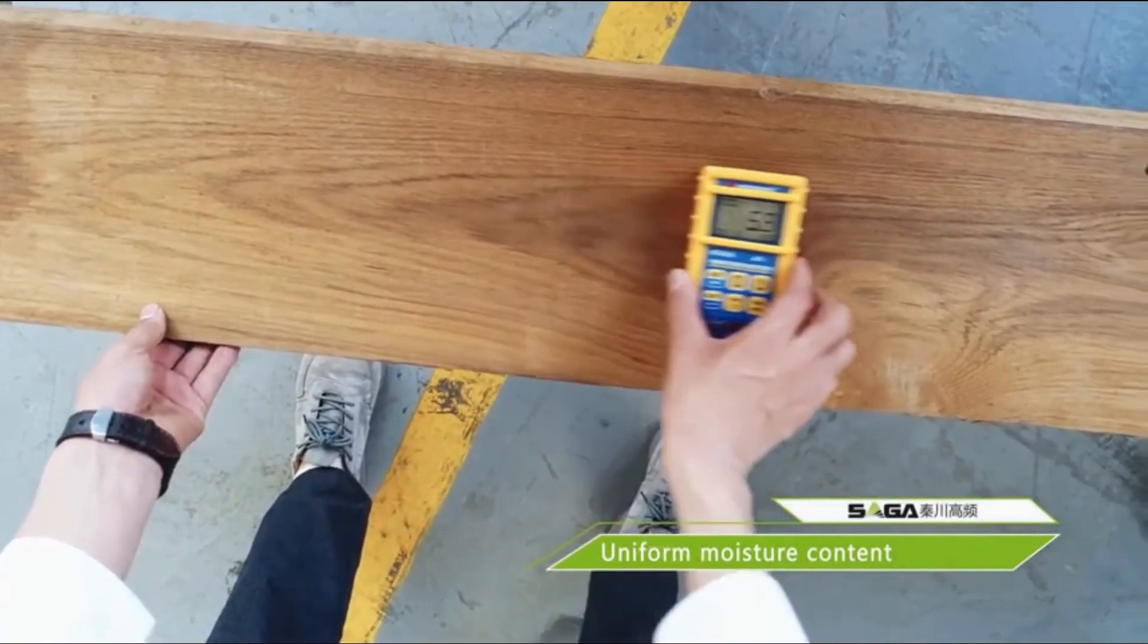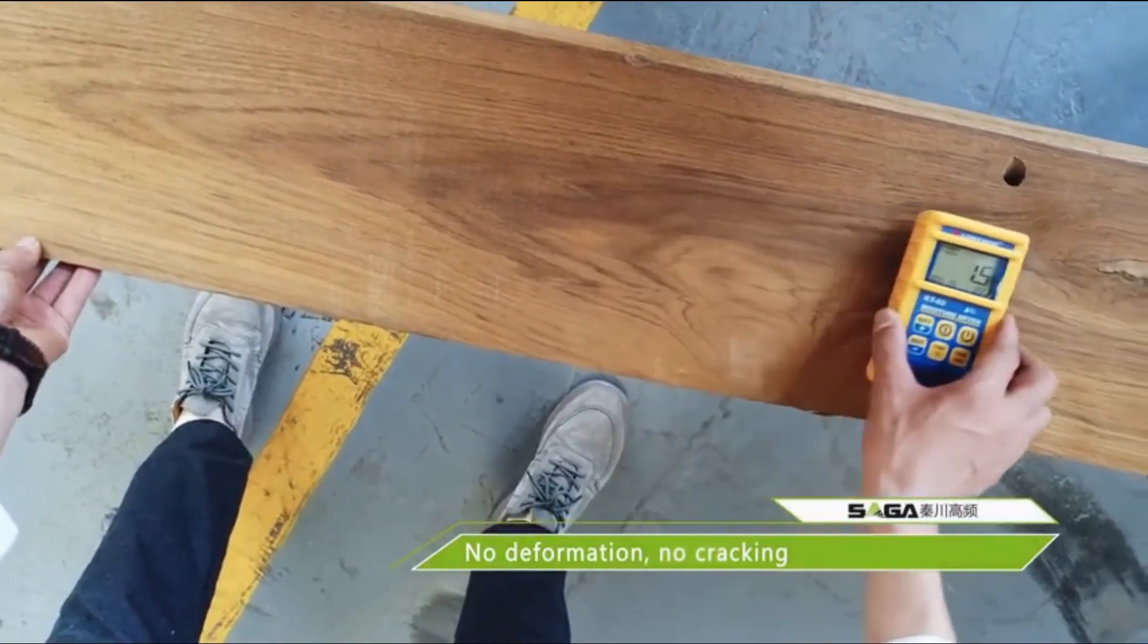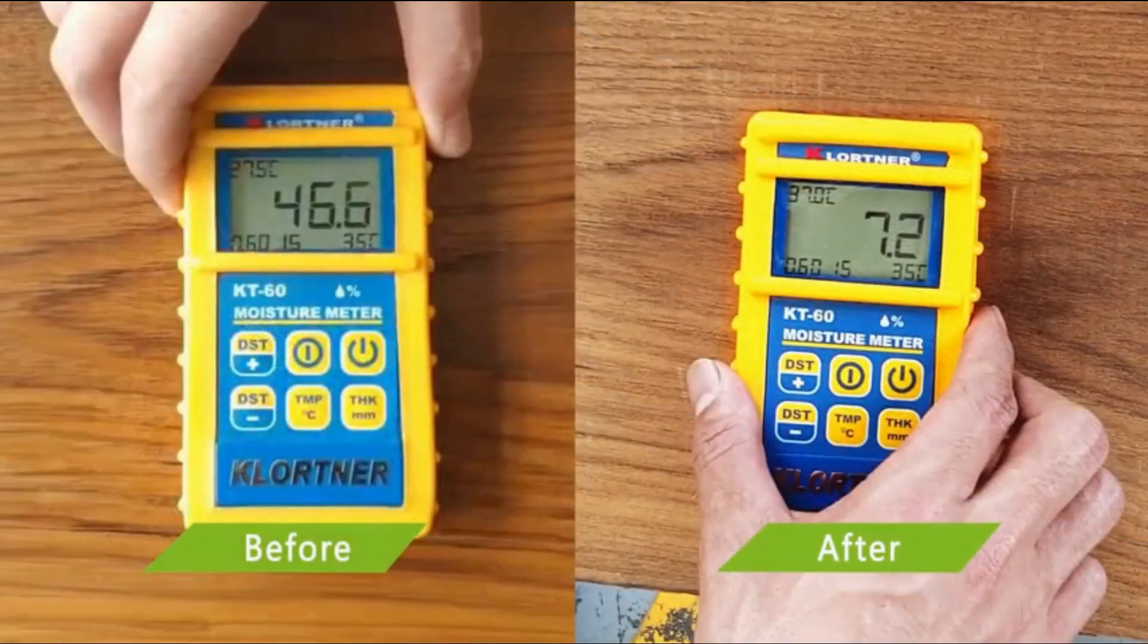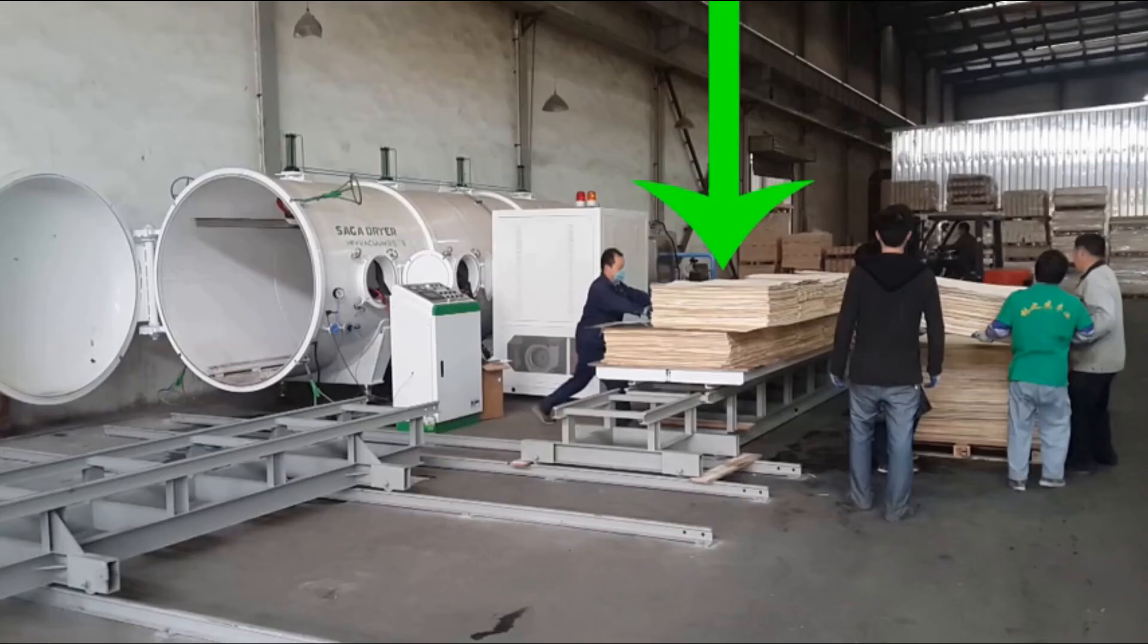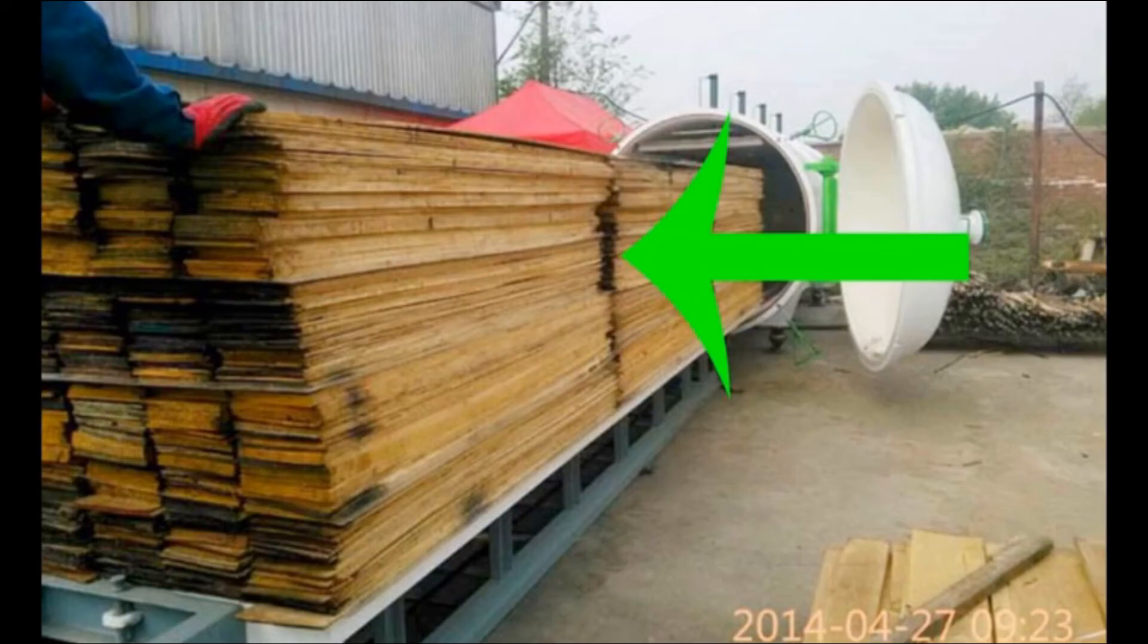Moisture content is very uniform. You can see the veneer is curled before drying and very flat after RF drying. The 8mm floor panel is warped by sand drying, but after RF, it is perfectly straight.